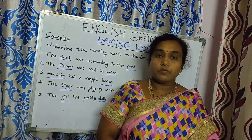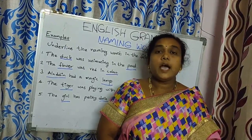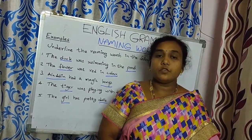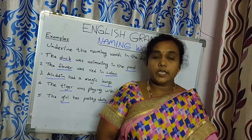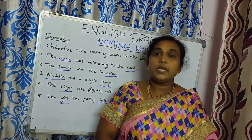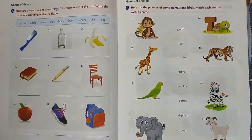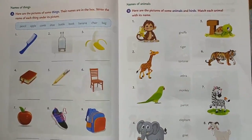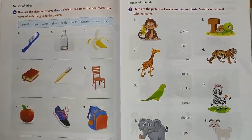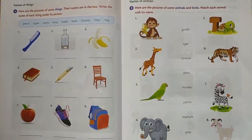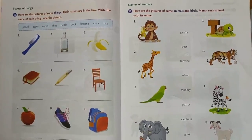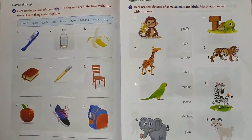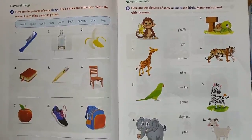Complete those pages in the textbook. Once again I am repeating: please complete page numbers 14, 15, 16, 17, 18, and 19 in the grammar textbook. Here are the pictures of some things. Their names are in the box. Write the name of each thing under its picture.